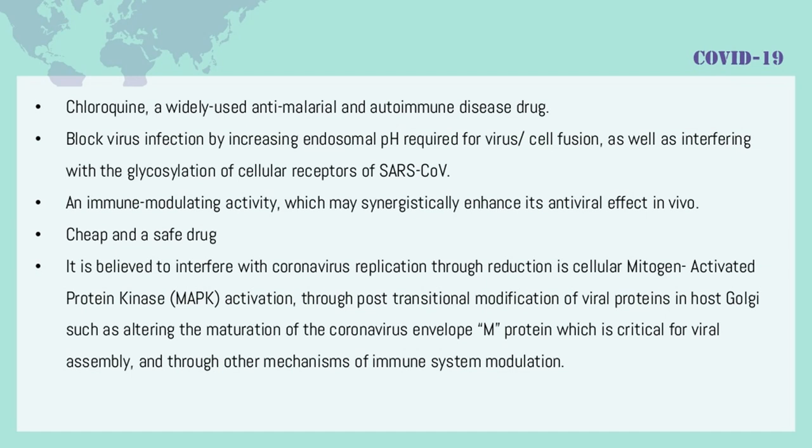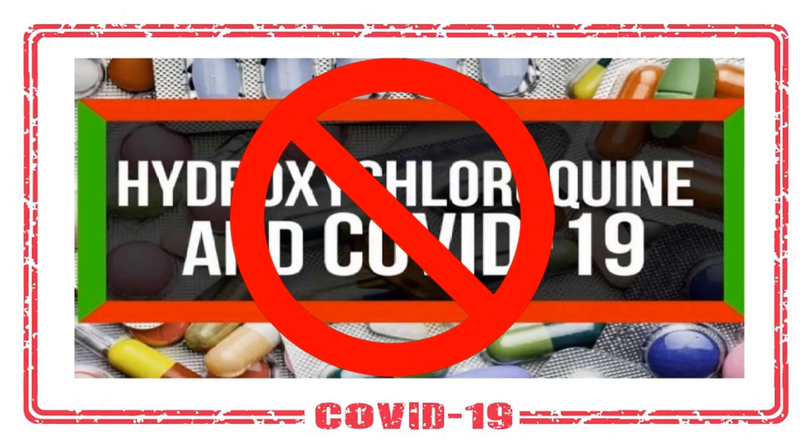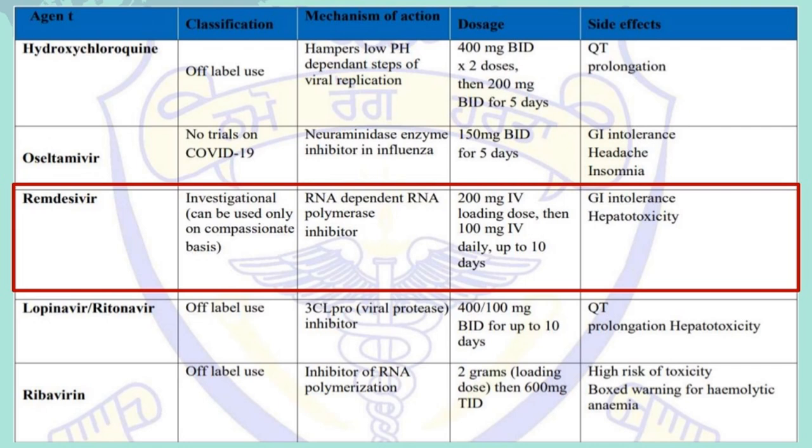Treatment options include Chloroquine, a widely used anti-malarial and autoimmune disease drug. It blocks virus infection by increasing endosomal pH required for virus/cell fusion, as well as interfering with the glycosylation of cellular receptors of SARS-CoV. It also has an immune-modulating activity, which may synergistically enhance its antiviral effect in vivo. Chloroquine is cheap and considered safe; it is believed to interfere with coronavirus replication through reduction in cellular MAPK activation, through post-translational modification of viral proteins in host Golgi, and through other mechanisms of immune system modulation.